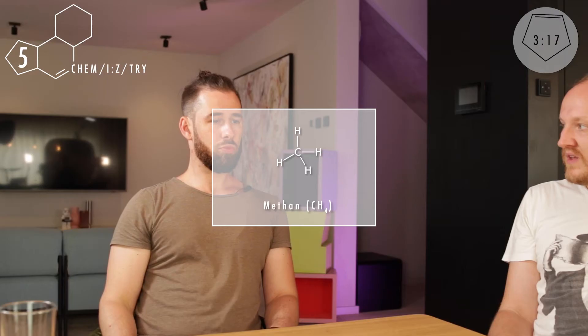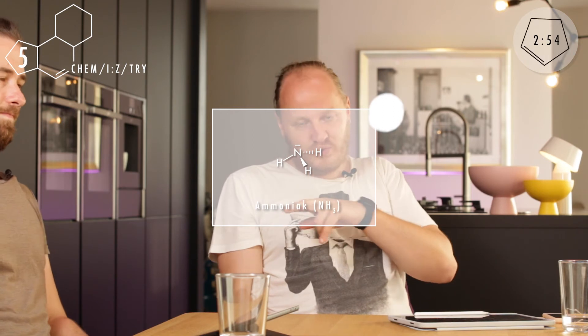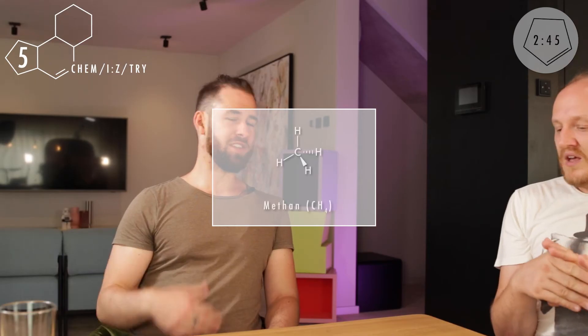Deswegen ist Tetraeder so wichtig, weil es auch einfach günstig ist, wenn die möglichst weit voneinander entfernt sind, die Dinge, die da dranhängen, an diesen vier Bindungen. Das können auch Ammoniak zum Beispiel – das ist auch ein Tetraeder, da ist dann aber ein nichtbindendes Elektronenpaar, ein Ligand, also was Angelagertes. Ansonsten treffen wir das in ganz vielen Molekülen immer wieder an und das ist auch wichtig beim Zeichnen.